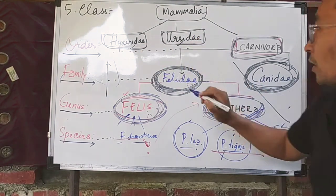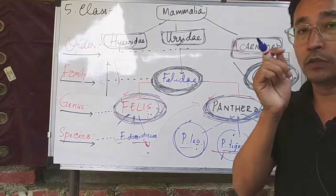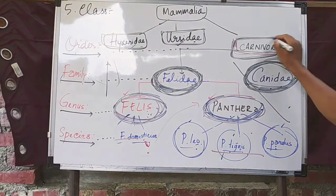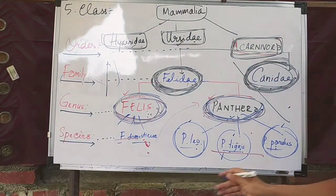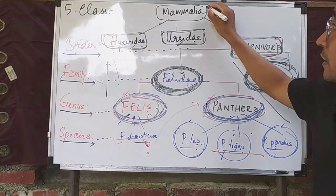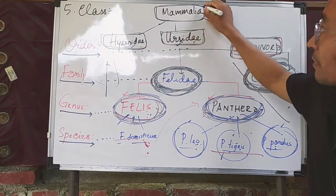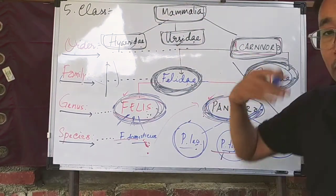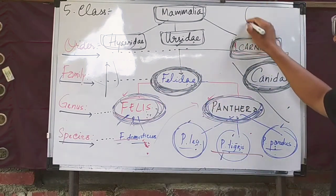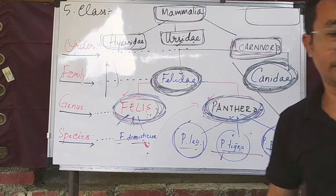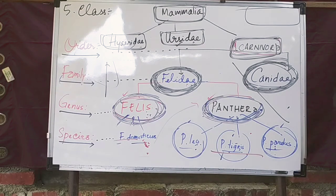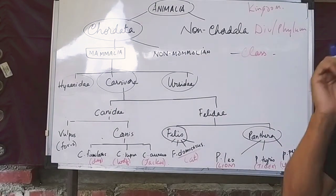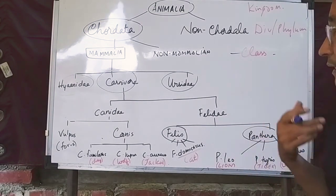A class is made up of one or more related orders. So they are put under the class. Can you think of another class? If you are in one class, it will be different than another class. A class will contain one or more related orders.